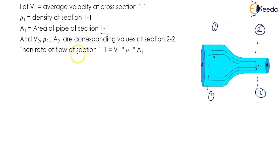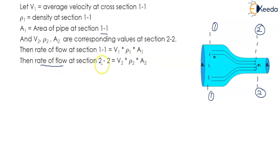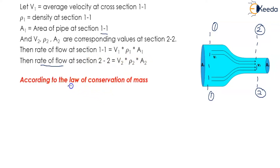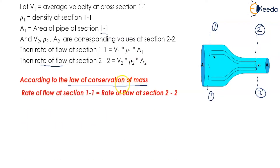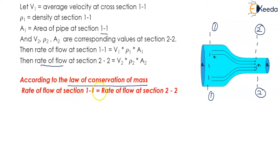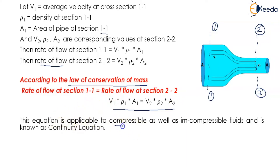The rate of flow at section 1 equals velocity v1 multiplied by density rho1 multiplied by area A1. Hence the rate of flow at section 2 equals v2 times rho2 times A2. According to the law of conservation of mass, the rate of flow at section 1 equals the rate of flow at section 2, giving: v1 · rho1 · A1 = v2 · rho2 · A2. This equation is applicable to compressible as well as incompressible fluids and is termed the continuity equation.